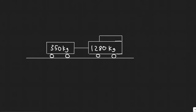In this problem, we're told a 1,280 kilogram car pulls a 350 kilogram trailer. The car exerts a horizontal force of 3.6 times 10 to the 3 newtons against the ground in order to accelerate. What force does the car exert on the trailer? Assume an effective coefficient of friction of 0.15 for the trailer.